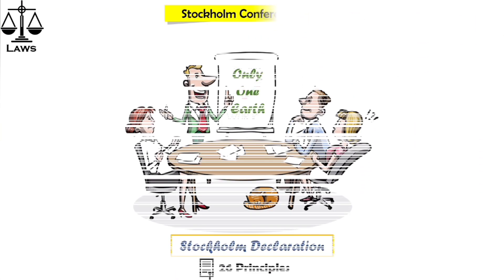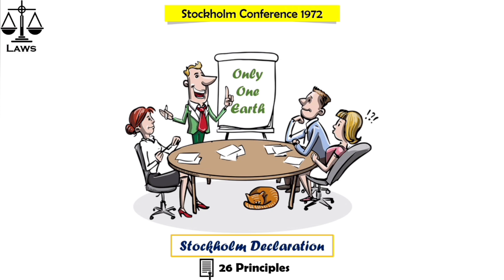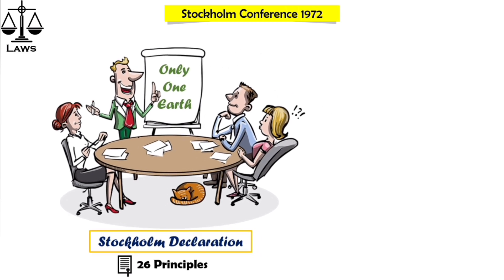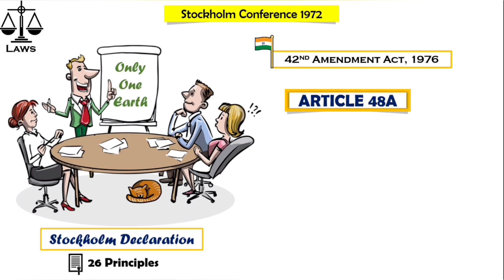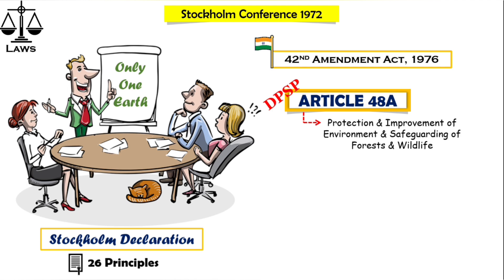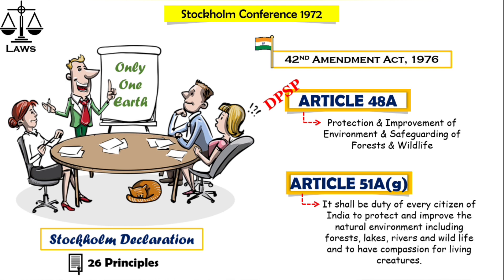Now let's look at some laws related to environment, forest, and wildlife. Following the Stockholm Conference of 1972, the first UN conference where environmental issues were discussed seriously, and in which India participated, the 42nd Amendment Act of 1976 added two articles: Article 48A, inserted in DPSP giving states the responsibility to protect and improve the environment, forest, and wildlife; and Article 51A(g), making it the duty of citizens to protect the environment, forest, wildlife, lakes, rivers, and other living creatures.